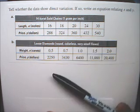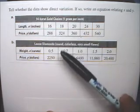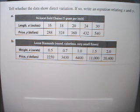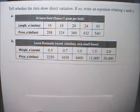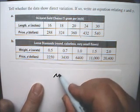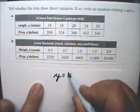In Example 7, they want to know if this information in the tables represent direct variation, and if so, we have to write an equation. Well, if it represents direct variation, it will always be in the form y equals kx.